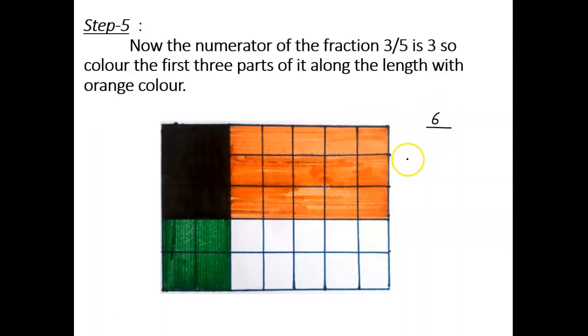As we multiply 2 upon 7 by 3 upon 5, it gives 6 as the numerator, that is the common part between both the shaded regions. The denominator is the total number of boxes.